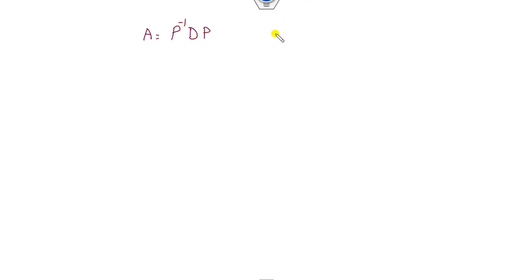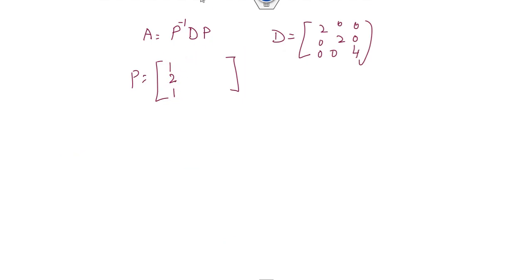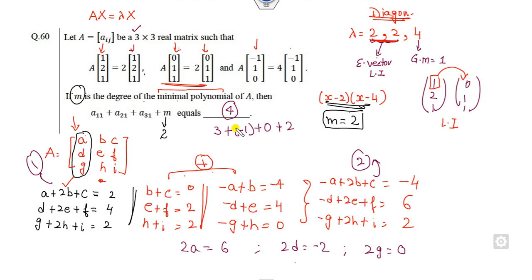The second method: since it's a diagonal matrix, write A = PDP⁻¹ where D is the diagonal matrix [2,0,0; 0,2,0; 0,0,4] and P is the matrix of eigenvectors [1,0,−1; 2,1,1; 1,1,0]. Find P⁻¹ and substitute to get the matrix. The third method: use PA = DP, then multiply and equate coefficients to find the same result. All three methods yield the same correct answer.